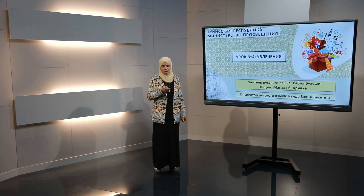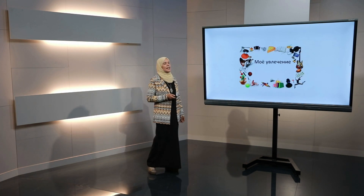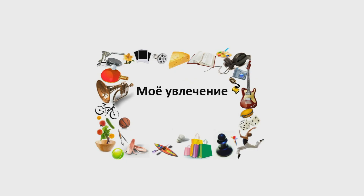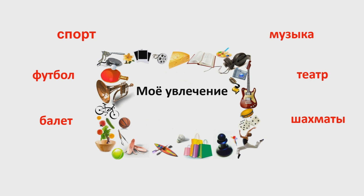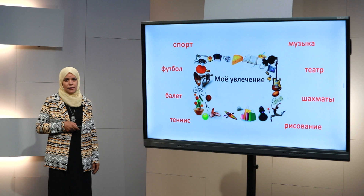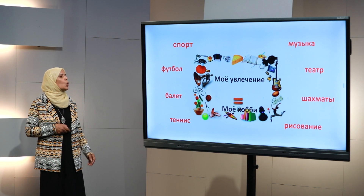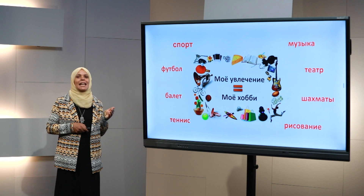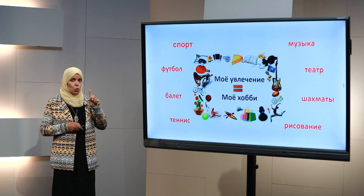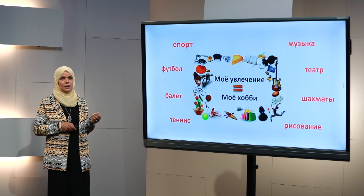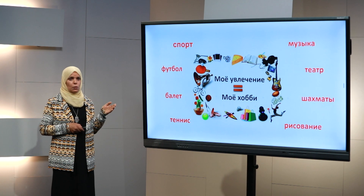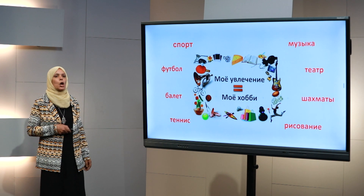Сначала надо знать, что слово «увлечение» — это «оно». Поэтому мы говорим: «моё увлечение — это спорт», «моё увлечение — это музыка», «моё увлечение — это футбол», «моё увлечение — это театр», «моё увлечение — балет, шахматы, теннис и рисование». Синоним «увлечение» — это «хобби». Слово «увлечение» — русское, а «хобби» — нерусское, оно пришло из английского языка. Хобби — тоже «оно», поэтому мы говорим: «моё хобби — это музыка».